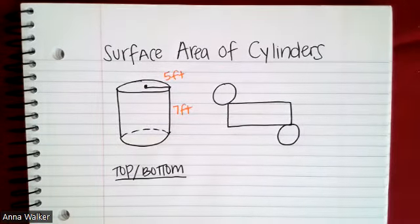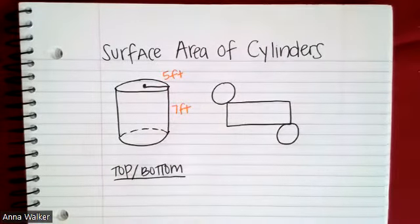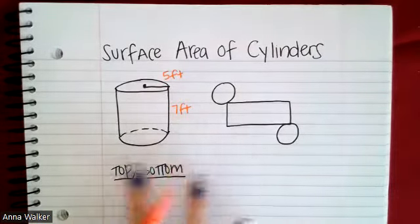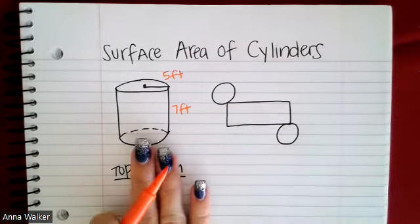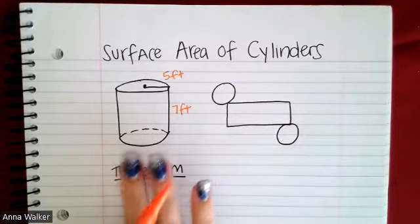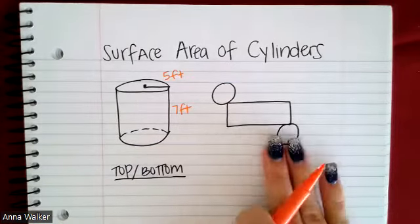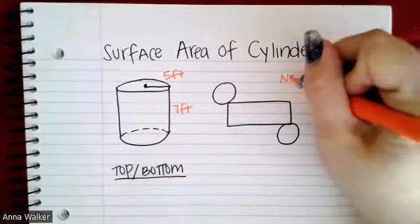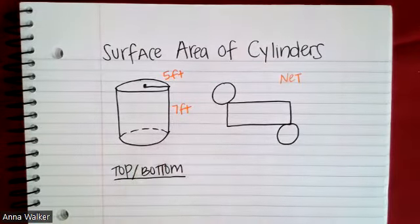If we had something shaped like a Pringles can, or something that had this cylinder shape to it, how can we figure out the total area of the surface? To really understand how we find the surface area of a cylinder, we want to break it down into what's called its net. A net is when we take a three-dimensional object and flatten it out to see what it would look like.